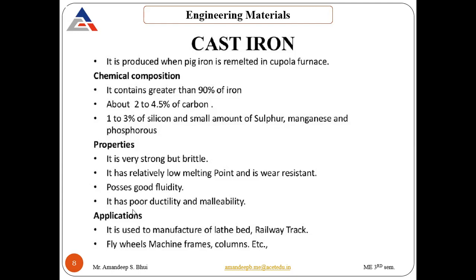Cast iron has poor ductility — because it is brittle, it is not ductile — and it has poor malleability also. So these properties are missing in cast iron. Another property is that it is a good shock absorber and it absorbs sound also, so it has good vibration absorbing property. Because of these properties, it is used in the manufacturing of lathe beds and railway tracks.